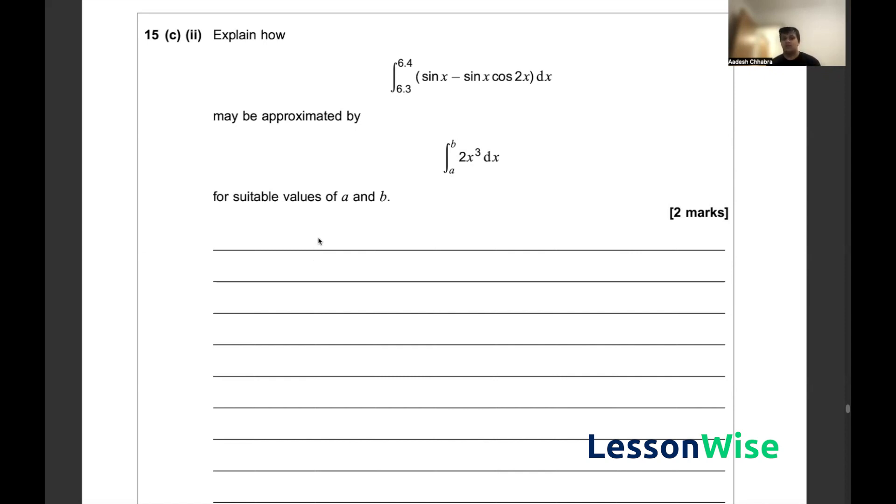Essentially we have to go back to the basis of how approximation of sin x minus sin x cos 2x equals 2x cubed is only applicable for small angles. If you understand sin graphs and cos graphs and even tan graphs, they're all periodic graphs.